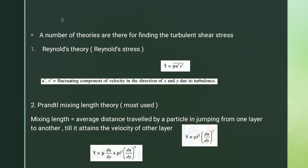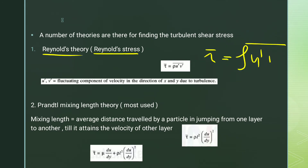The next theory is Reynolds theory — Reynolds stress. The turbulent shear stress is: tau bar equal to rho times u-dash-bar into v-dash-bar, where u-dash and v-dash are the components of velocity in the x and y directions due to turbulence, representing the fluctuations.